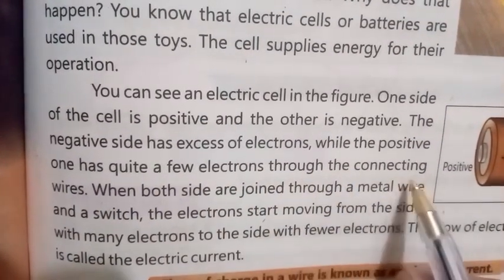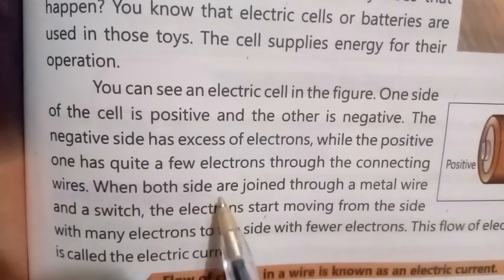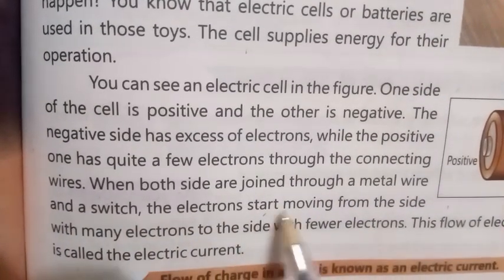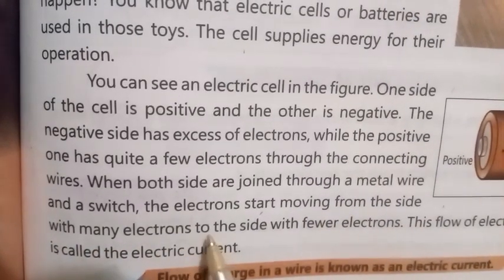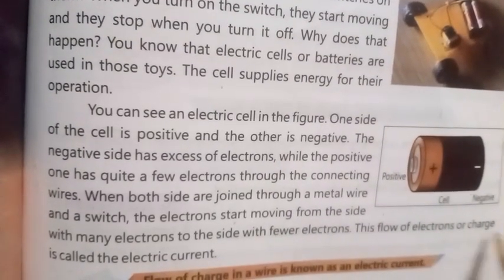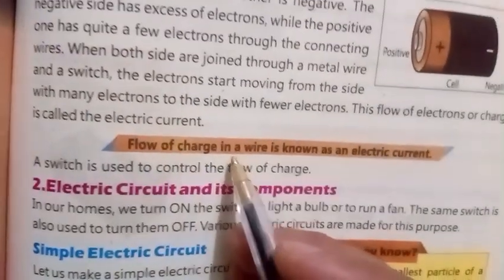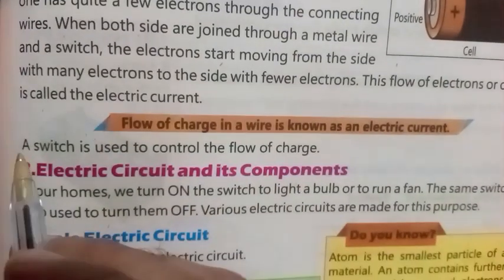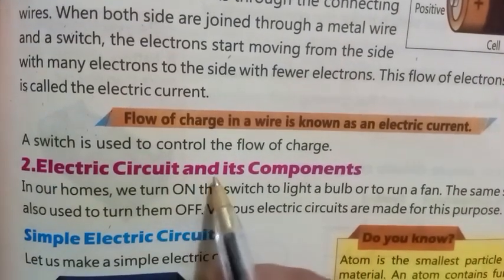The negative side has excess of electrons while the positive one has quite a few electrons. When both sides are joined through a metal wire and a switch, the electrons start moving from the side with many electrons to the side with fewer electrons. This flow of electrons, or charge, is called the electric current. Flow of charge in a wire is known as an electric current. A switch is used to control the flow of charge.